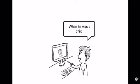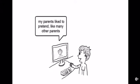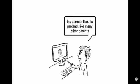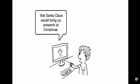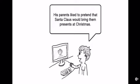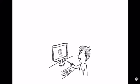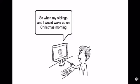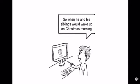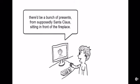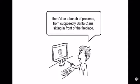Example: 'When I was a child, my parents liked to pretend, like many other parents, that Santa Claus would bring us presents at Christmas. So when my siblings and I would wake up on Christmas morning, there'd be a bunch of presents from supposedly Santa Claus sitting in front of the fireplace.' You then imitate: 'When he was a child, his parents liked to pretend that Santa Claus would bring them presents at Christmas. When he and his siblings would wake up on Christmas morning, there'd be a bunch of presents from supposedly Santa Claus sitting in front of the fireplace.'